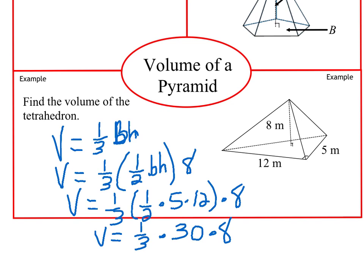Next, I would go ahead and multiply one-third times 30. It's just easier to do that than multiplying 30 times 8 and then dividing by 3.